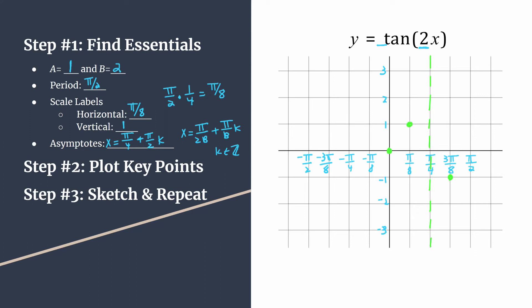This is the pattern we use for our tangent graph. Step 3 is simply to sketch in the curves and repeat the pattern. It helps to place the next point that would start your pattern at (pi over 2, 0) as you draw the curves. Here is one cycle of tangent — we finish it up at that pi over 2 intercept, and we have one complete cycle.